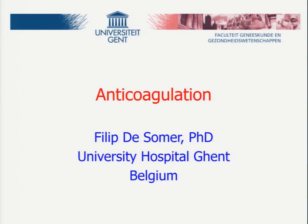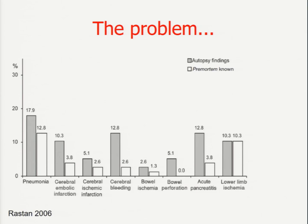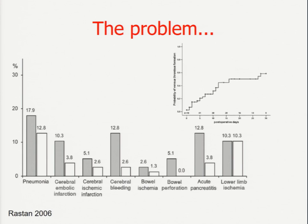I would like to discuss anticoagulation, which is probably one of the big challenges when you use extracorporeal circulation. The problem is that we are aware, all of us, that there are some thromboembolic events in those patients. But for those who do not survive and where you actually do an autopsy afterwards, you see that the incidence is even bigger. Especially during the first 10 days, there is an increase of these numbers, meaning anticoagulation and control of thrombosis is a major issue during this type of therapy.